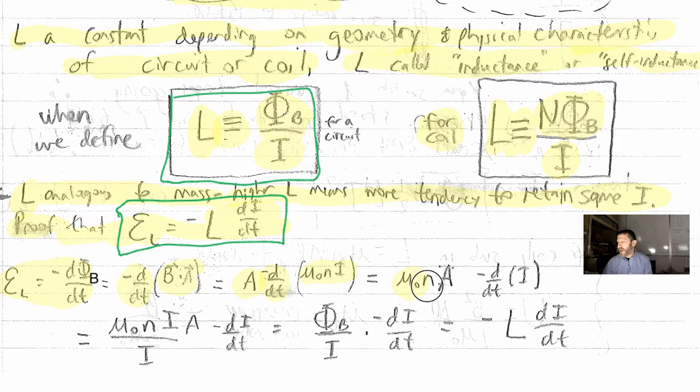And the N is the number of turns per unit length. If A is the area, what would the area be for a coil of radius R? Pi R squared. How come I don't have to worry about any areas outside of my coil?